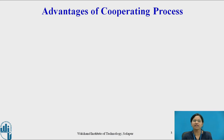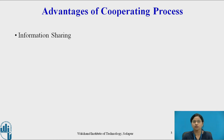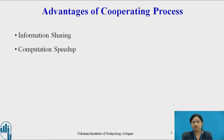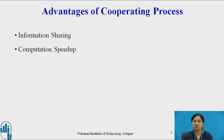Let us see the advantages of cooperating processes. Cooperating processes allow information sharing, as many users require the same type of information to be shared — for example, a file or variable. Computation speedup is another advantage: suppose we have a task to be executed faster. That task can be divided into subtasks, and those subtasks can be run in parallel to get the result faster. In this way, cooperating processes support computation speedup.